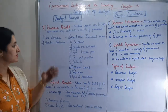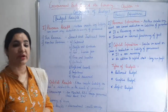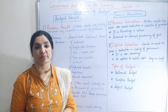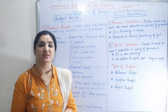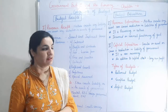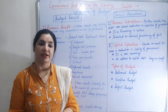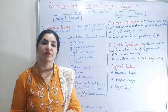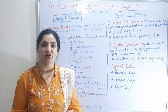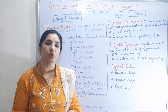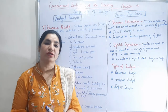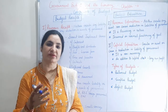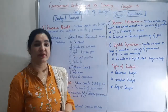Next is non-tax revenue. There are various heads under which government receives money except from taxes. First is interest — the amount which government receives as a percentage from loans provided by the government, say to the state government, local government, RBI, or other countries' governments. When these loans are repaid with interest, it is counted under this head.